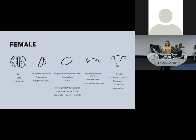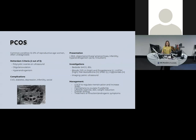PCOS is a big one that Monash expects you to know a lot about. PCOS is polycystic ovarian syndrome — not just polycystic ovaries. About 12–20% of women have it and it's often undiagnosed. To be diagnosed, you need two out of three Rotterdam criteria: polycystic ovaries on ultrasound, oligo-anovulation, and hyperandrogenism either clinically or with pathology. It has many complications including cardiovascular disease, diabetes, infertility, and significant social and mental health implications.